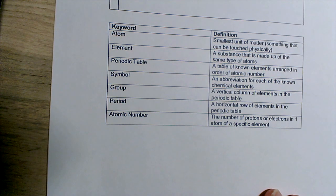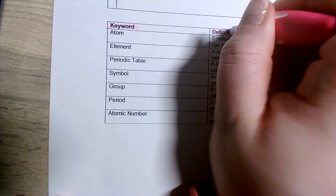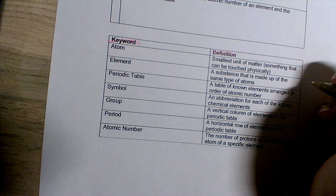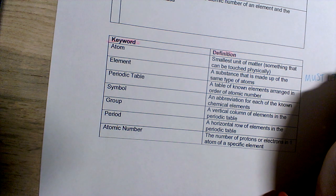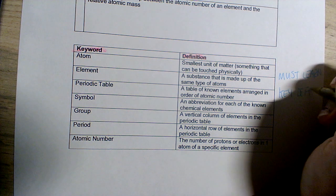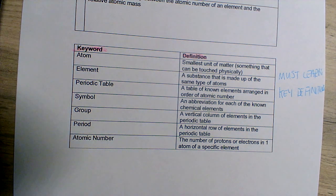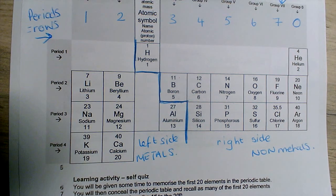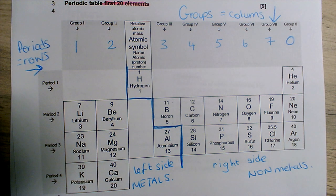At the bottom of the page there is a table with some keywords and definitions — these are really important to learn. Must-learn key definitions. That brings us to the end of lesson 1 in the matter booklet. Hopefully you feel a lot more confident with the periodic table, and confidence will only grow as we work through these lessons. Thank you. Bye.